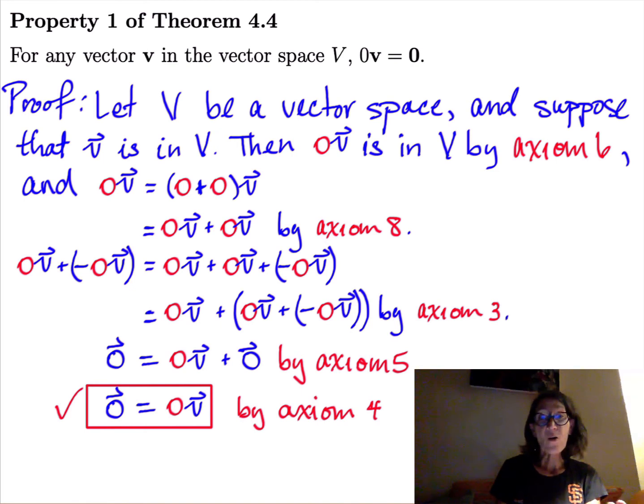All right. So now we know that a vector space, an arbitrary vector space, has an additive identity element. And, in fact, we can get that additive identity element by just multiplying any vector by the scalar 0. So this is a property that we knew that R^n had, and we wanted other vector spaces to have it, but we had to prove it.